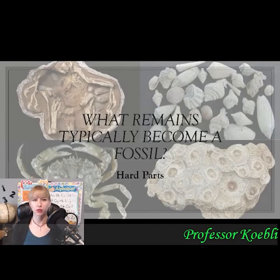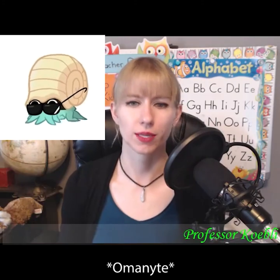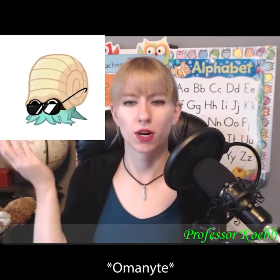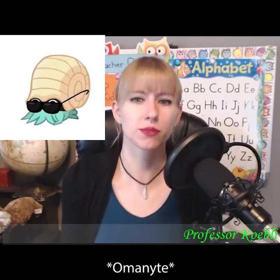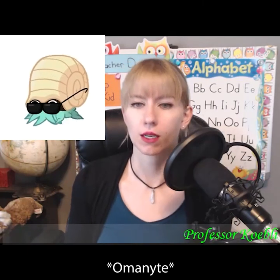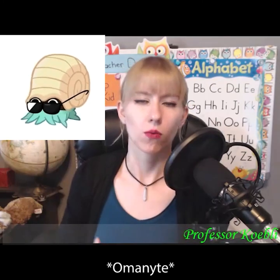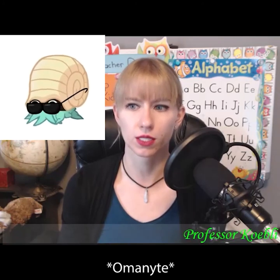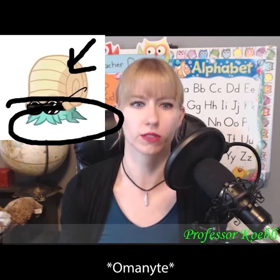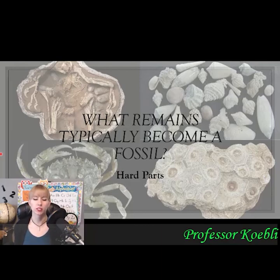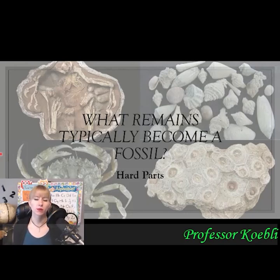What remains typically become a fossil? Using Pokemon as an example — Kabuto becomes Kabutops, and then there's Omanyte. These were fossils brought back to life. What was preserved was not the soft tissue but the shell and hard parts. Hard parts are things like shells, chitin, bones, teeth, and exoskeletons — like the exoskeleton of a beetle. Soft parts end up decaying away, which is why scientists don't typically find fossils with skin or flesh still intact unless under very specific and special circumstances.